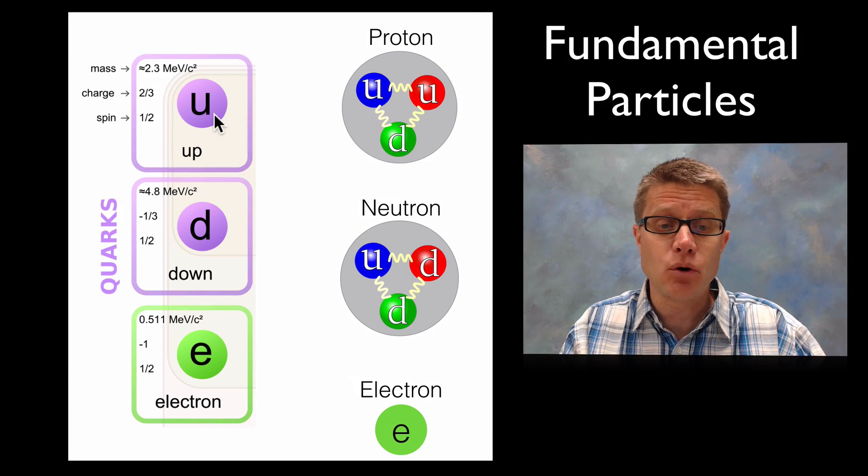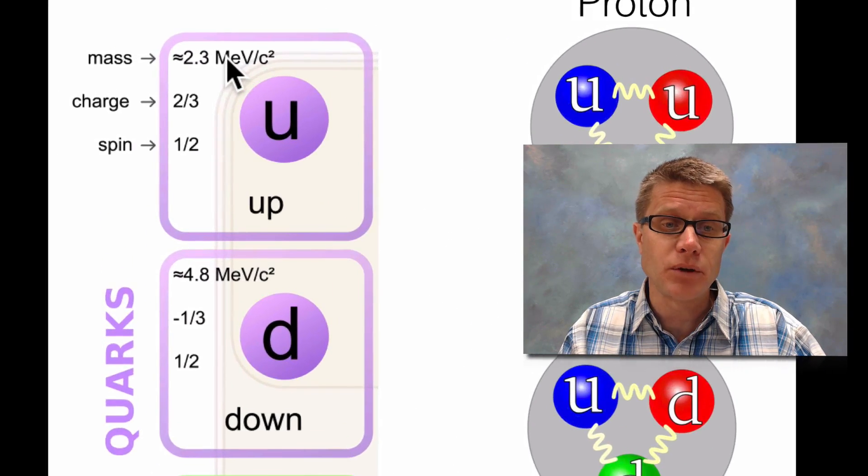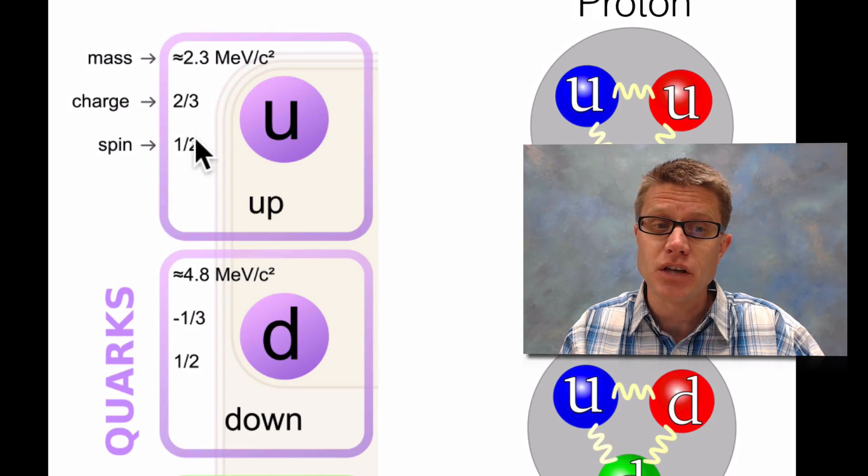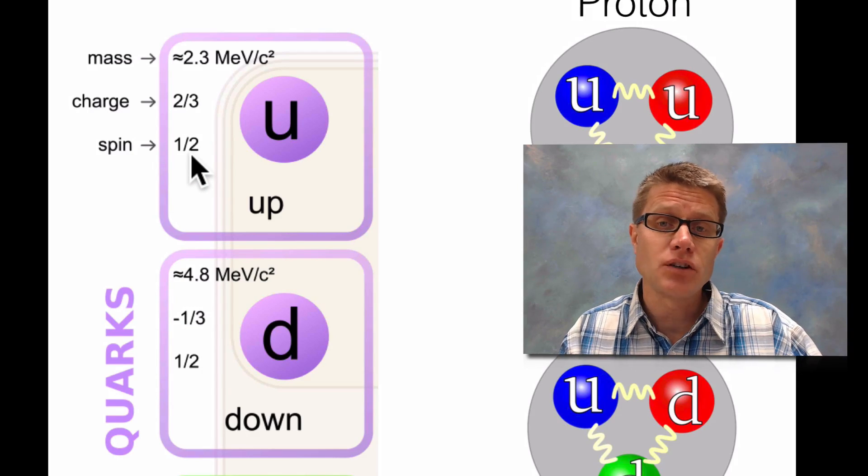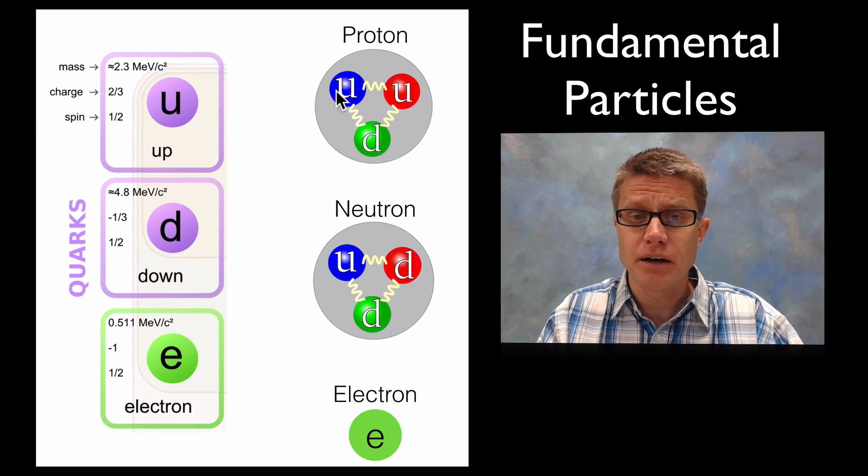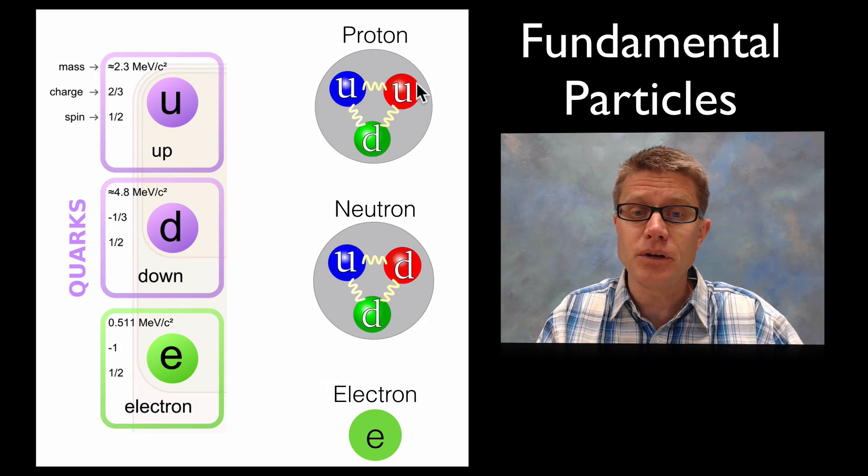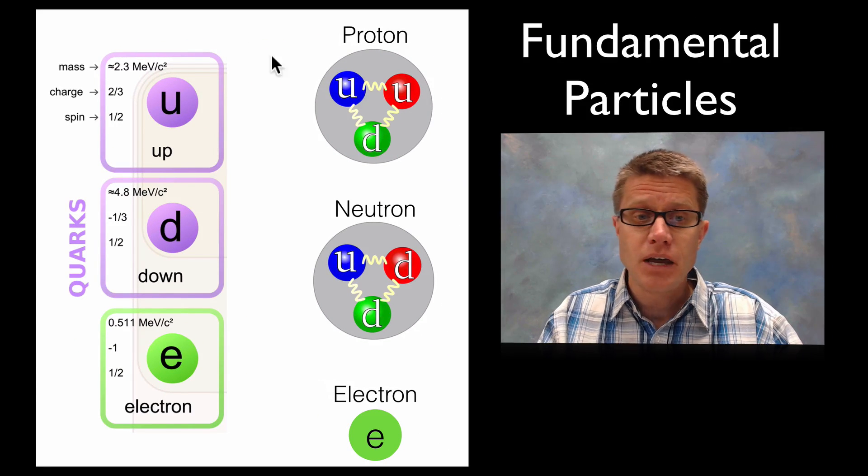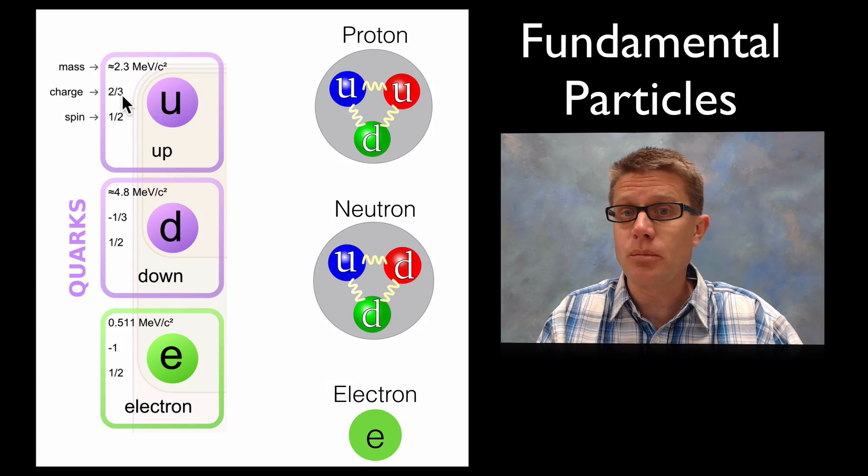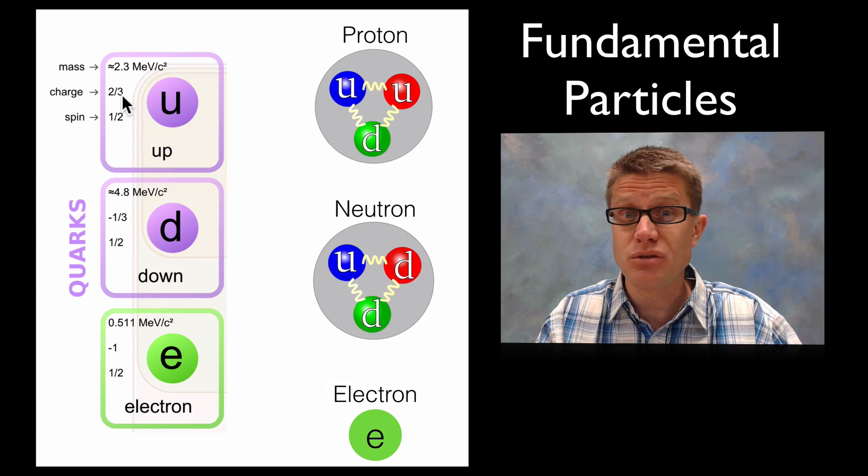And so here is a data set on an up quark and a down quark. You can see what their mass is, what their charge is, and then what their spin is. And so if I want to figure out what is the charge of a proton, I am going to have to add up all three of these fundamental particles. And so if I take the charge of two up quarks, two thirds times two, that is four thirds.